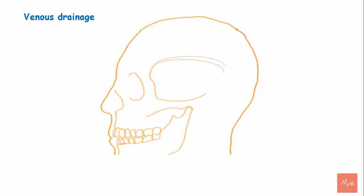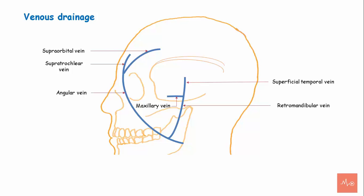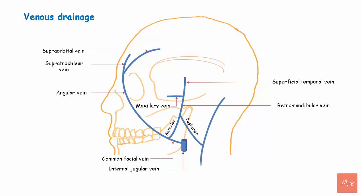The veins of the scalp accompany the arteries. The supratrochlear and supraorbital veins join the angular vein to form the facial vein. The superficial temporal vein joins the maxillary vein to form the retromandibular vein, which divides into anterior and posterior divisions. The anterior division joins the facial vein to form the common facial vein, draining into the internal jugular vein. The posterior division joins the posterior auricular vein to form the external jugular vein, draining into the subclavian vein.